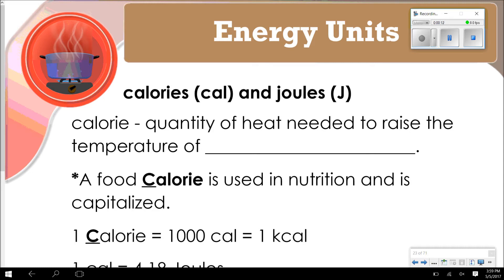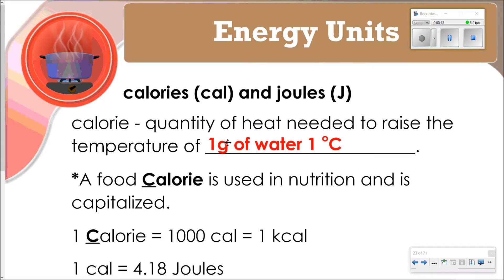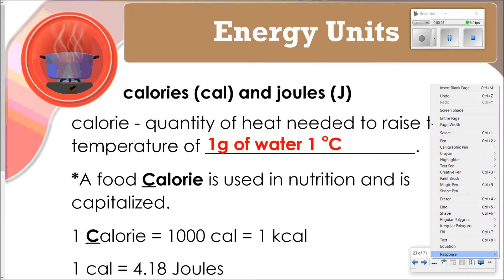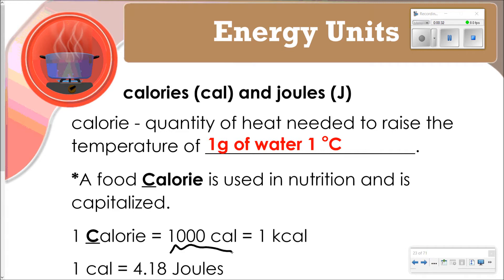We're going to get started with a discussion about the difference between calories and joules. The calorie is the quantity of heat needed to raise the temperature of one gram of water one degree Celsius. It's a little different than a food calorie — we capitalize food calorie because it represents 1,000 calories, or one kilocalorie.